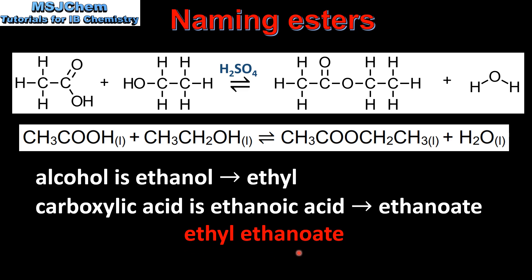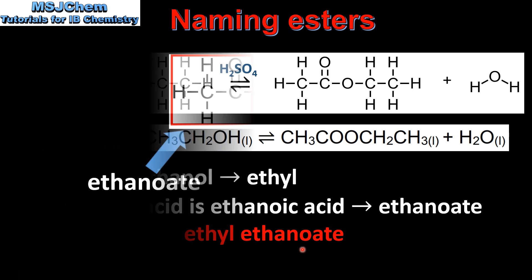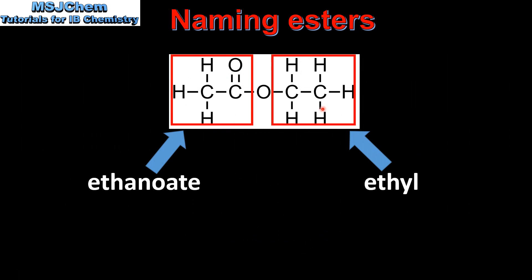Let's take a closer look at the naming. On the right we have the alcohol part, which was a 2-carbon alcohol — ethanol — that has become ethyl. On the left we have the carboxylic acid part: it was a 2-carbon carboxylic acid, ethanoic acid, that becomes ethanoate.